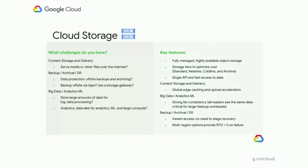Backup, archival, and DR is a very common use case where you have a set of data on-premises that you're looking to protect. You want to store it remotely on a different media to protect yourself against a disaster — either a physical disaster or someone accidentally deleting data on-premises — and be able to recover it via a backup process. Google Cloud Storage is integrated with very many backup and DR products from our partners and is available to use for backup, archival, and DR.